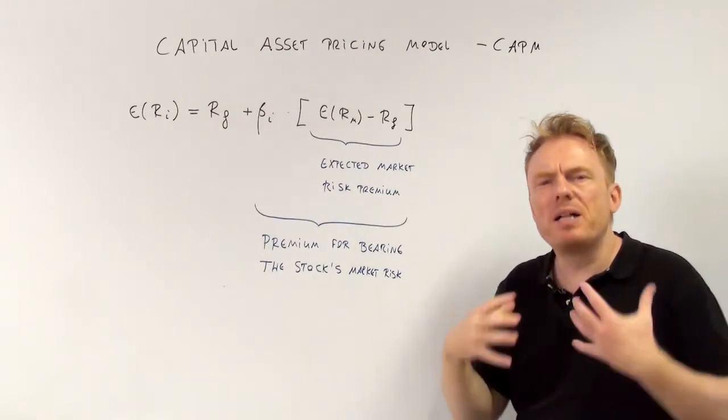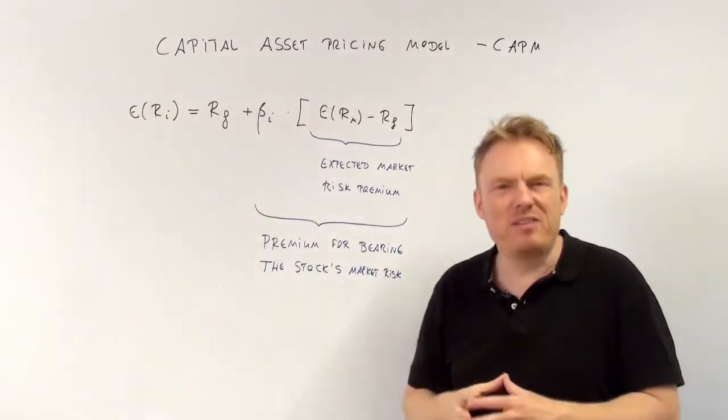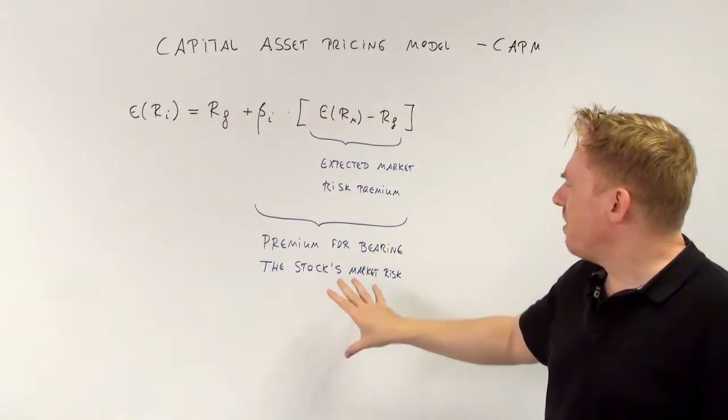If we multiply this expected market risk premium by beta of the given share, we get the premium for bearing the stock's market risk.